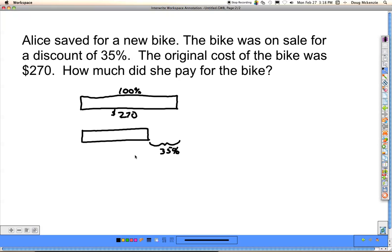Now there are two ways that we can do this. And what we want to find is how much did she pay for the bike. There are two ways that we can do it. We can find what 35% is and we could subtract that from the 100%, or we could figure out what this is as a percentage and find out what amount that is of 270. So I'll show you both methods.